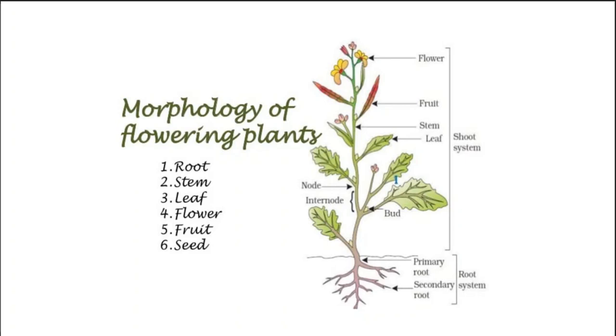Different parts of the plant such as roots, stem, leaf, flower, fruit, and seeds — all these morphologies we will discuss in brief in this chapter. So let's start the chapter.